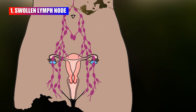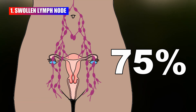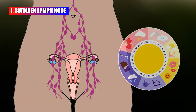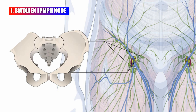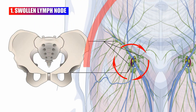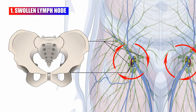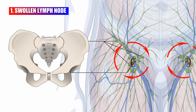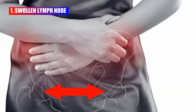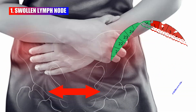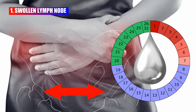75 percent of women can experience inguinal lymph swelling during their ovulation time. The inguinal lymph nodes are small glands and they are located on both sides of the pelvis. Women can also experience this swelling on the same side where the eggs are released from the cycle.